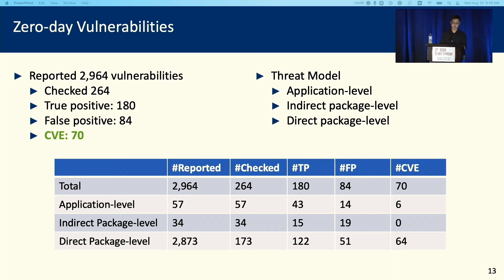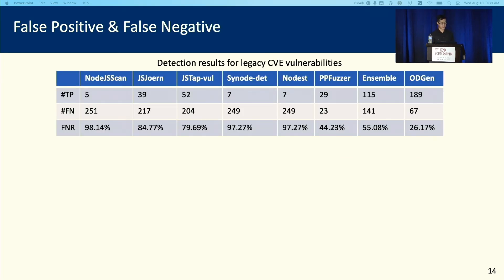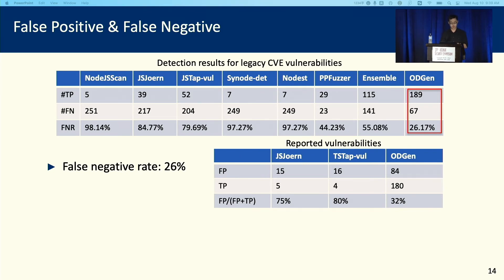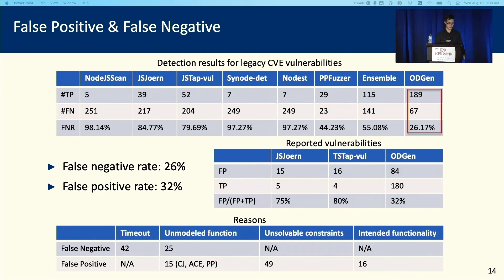Application level means if an attacker has control over the network request or response, they can launch an end-to-end attack on the targeted server. Indirect package level means the package itself is not vulnerable, but it requires some other vulnerable packages which make it vulnerable. We also evaluated our false positive and false negative rates. Our false negative rate, evaluated by running our tool on legacy CVE vulnerabilities, is around 26%, which is much better than other tools. Our false positive rate also compares favorably with other static analysis tools. We split the reasons for false positives and negatives into four categories, including unmodeled functions and intended functionality.